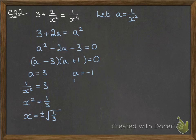Then with the other one, A equals minus 1 gives us 1 over x squared is minus 1. That gives us x squared equals minus 1, which we can't do. So that's an invalid solution. And our final solution is just those two that we had there of x equals positive square root of a third or negative square root of a third.